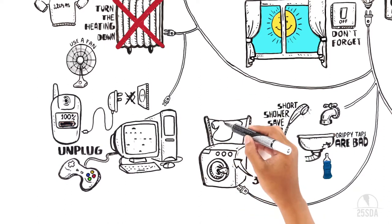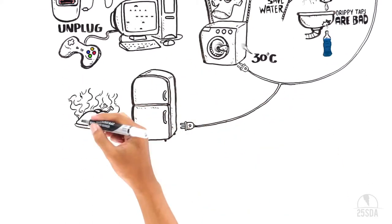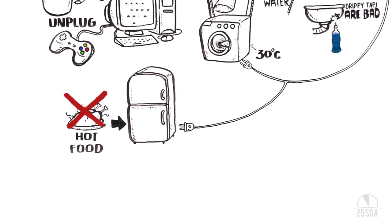Set your washing machine to wash at 30 degrees Celsius. Dry your clothes outside instead of using a tumble dryer. Close the fridge door. And never put a hot meal in the fridge. It takes a lot of energy to cool it down.